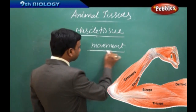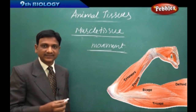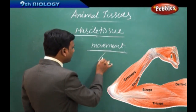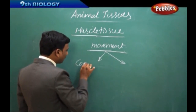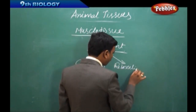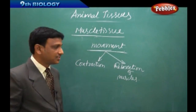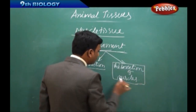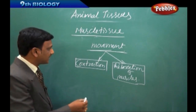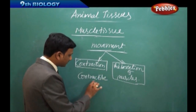These movements are caused by the muscles. Movement takes place by two different processes: contraction and relaxation of muscles. For this contraction and relaxation, muscles are made up of contractile proteins — proteins which create contractions.